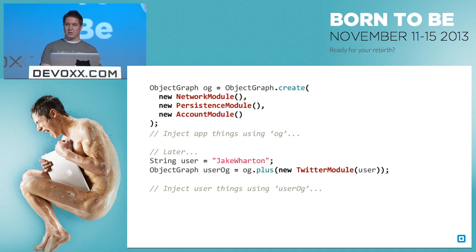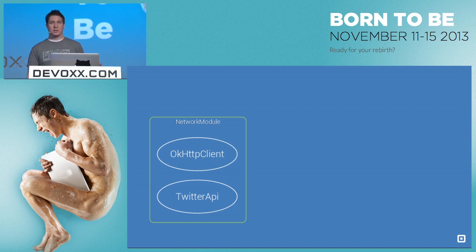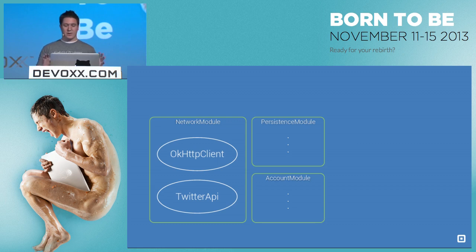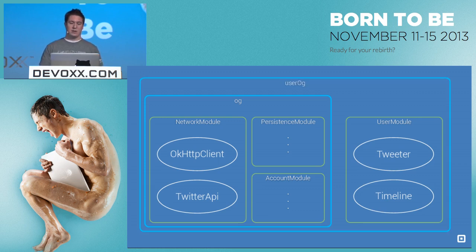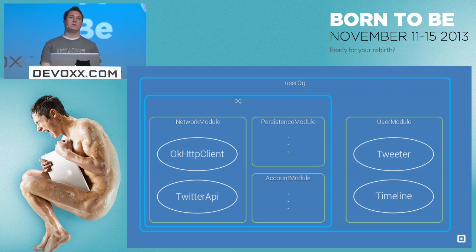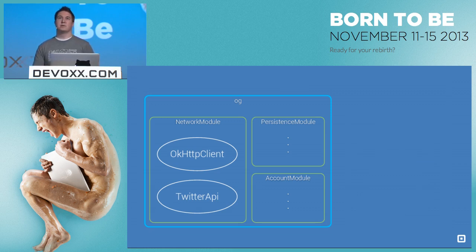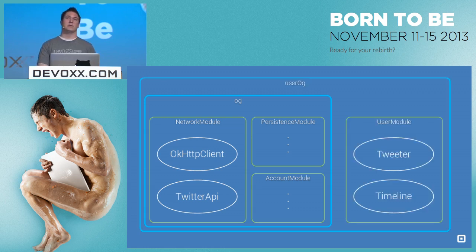To showcase more of what that looks like: we have our network module with two network-related dependencies, our persistence and account modules, and we wrap them up in the app object graph — the global graph. Later on we get our user, instantiate the user model, and when we plus it, it takes the original graph and adds the user module into a superset that contains both the original object graph and the new modules. If the user logs out, all we have to do is throw away that user object graph. We still have the one that maintains all other dependencies. When somebody logs back in, we do the same operation and plus on the additional modules.